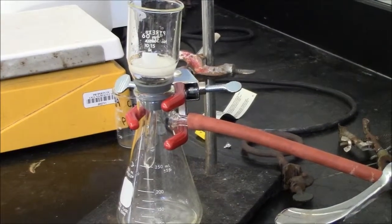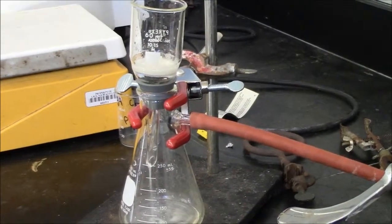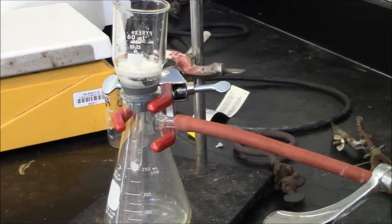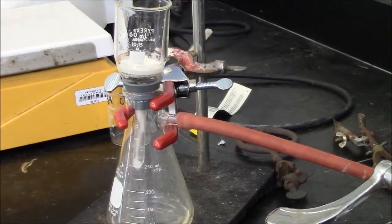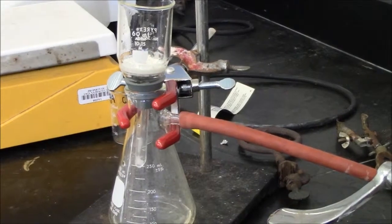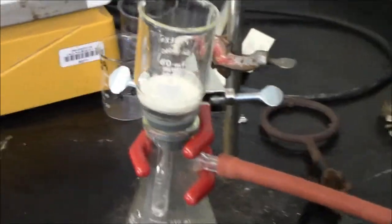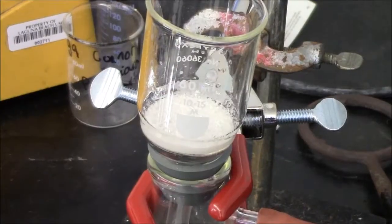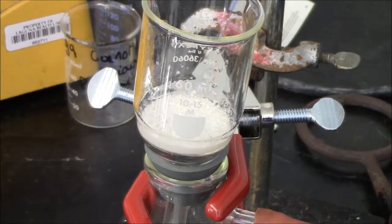It'll start drawing air through the frit. Here you can see that it's pulling air through the frit now. And so that will dry your crystals similar to blowing nitrogen over them. In the end, you should have your crystals on top in a fairly dry state and you'll need to scrape them out with some spatula.